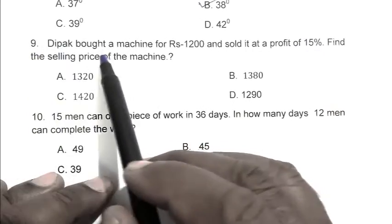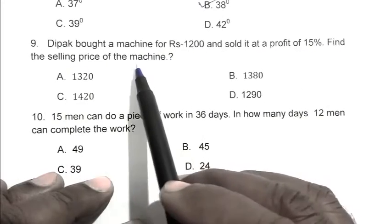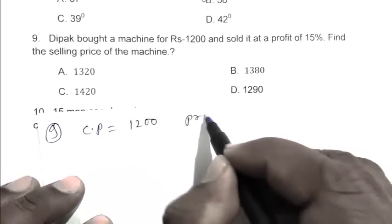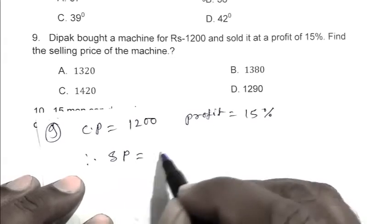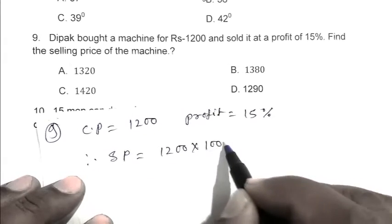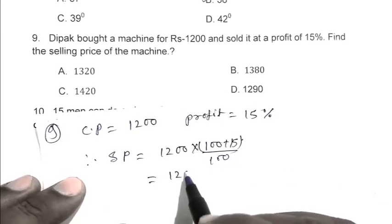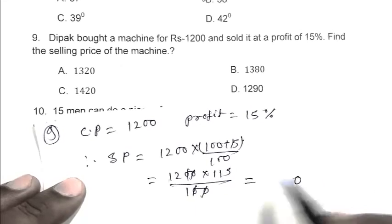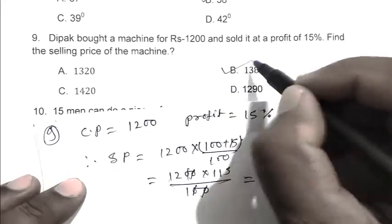Question number 9: Deepak bought a machine for Rs. 1200 and sold it at a profit of 15%. Find the selling price of the machine. CP is 1200, profit percentage is 15%. Therefore, selling price equals 1200 × (100 + 15) / 100, which is 120 × 115 / 10, equals 1380. B is the right answer.